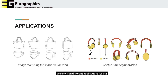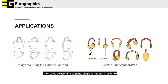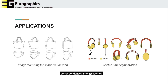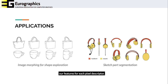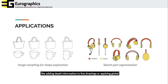We envision different applications for our descriptors. For instance, they could be useful to compute shape variations in order to allow the exploration of the design space between two sketches. Image morphing sequences often require highly reliable correspondences among sketches. Similarly, SketchZooms could be used to automatically segment and colorize semantic layers by training a classifier using our features for each pixel descriptor. These segmentations are useful in a number of applications like adding depth information to line drawings or applying global illumination effects.